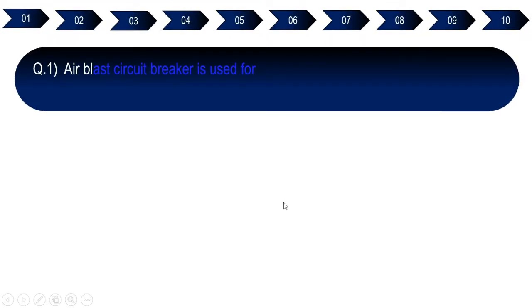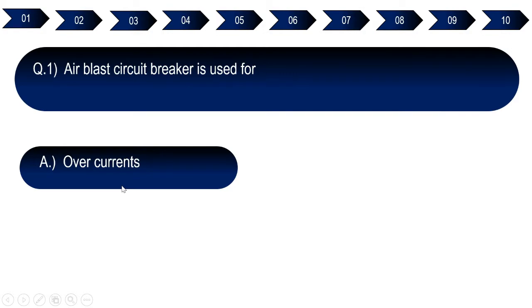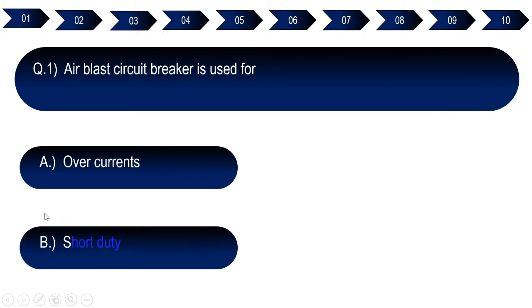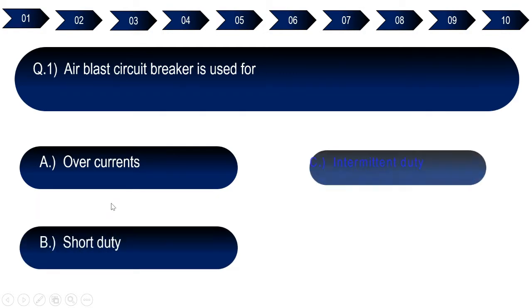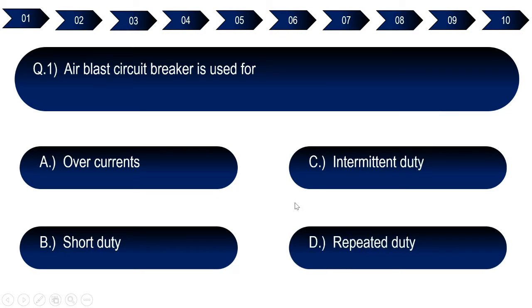Question number one: Air blast circuit breaker is used for. Option A: over currents. Option B: short duties. Option C: intermediate duties. Option D: repeated duties. The right answer for question number one is option D — repeated duty.